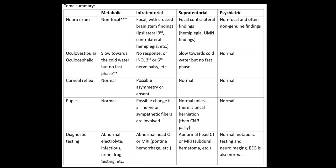In a supratentorial etiology — maybe a hemorrhage — we're going to have focal findings on the opposite side of the body: hemiplegia, hemisensory loss if the patient is awake, or contralateral homonymous hemianopsia. If unresponsive, we may just find hyperreflexia on the opposite side. In a psychiatric or psychogenic coma, we'll have a non-focal exam and usually non-genuine findings — things that are not physiologic.